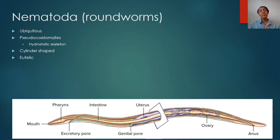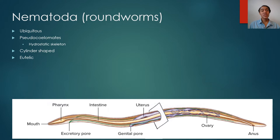Nematodes are pseudocoelomates, which means that they have a coelom, but their coelom is only lined by mesodermal tissue on one side. This coelom helps to make their hydrostatic skeleton, which is similar to what we talked about in annelids. But the way that they use this skeleton for locomotion is very different from what we see in annelids, and we'll talk about that in a couple of slides.